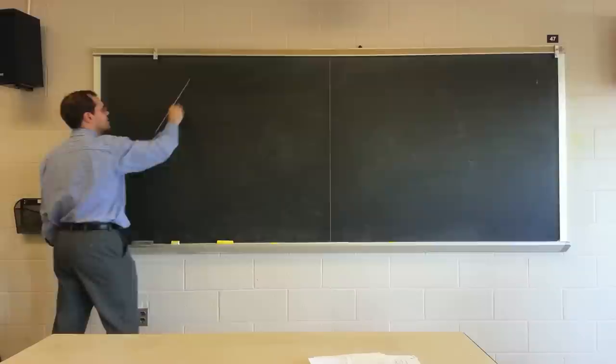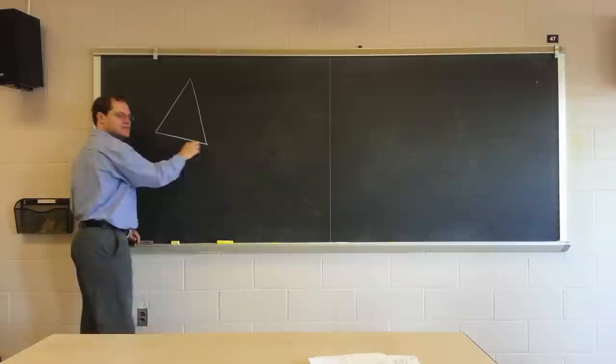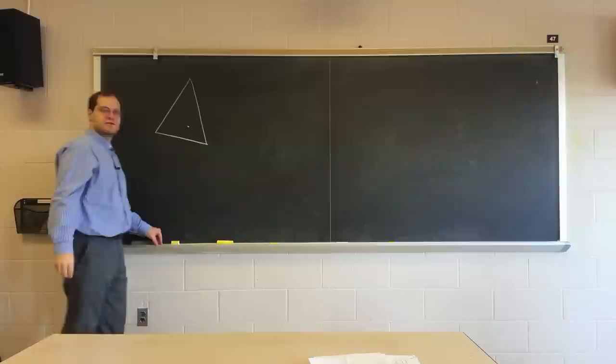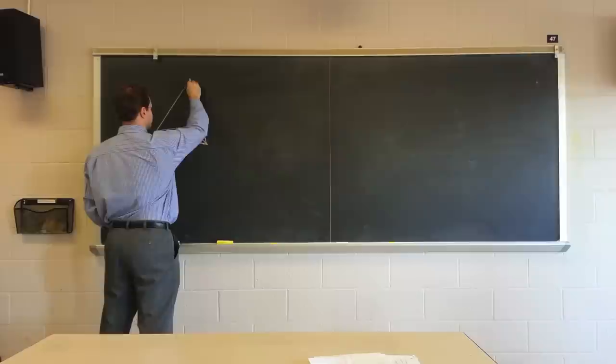So, let's start with Torricelli's problem. It's an unconstrained problem. Inside the triangle, we have to find the point from which the sum of distances to the three vertices is the smallest. And if you recall, the answer was, it's the special point from which each one of these angles is 120 degrees. And that's called Torricelli's point.